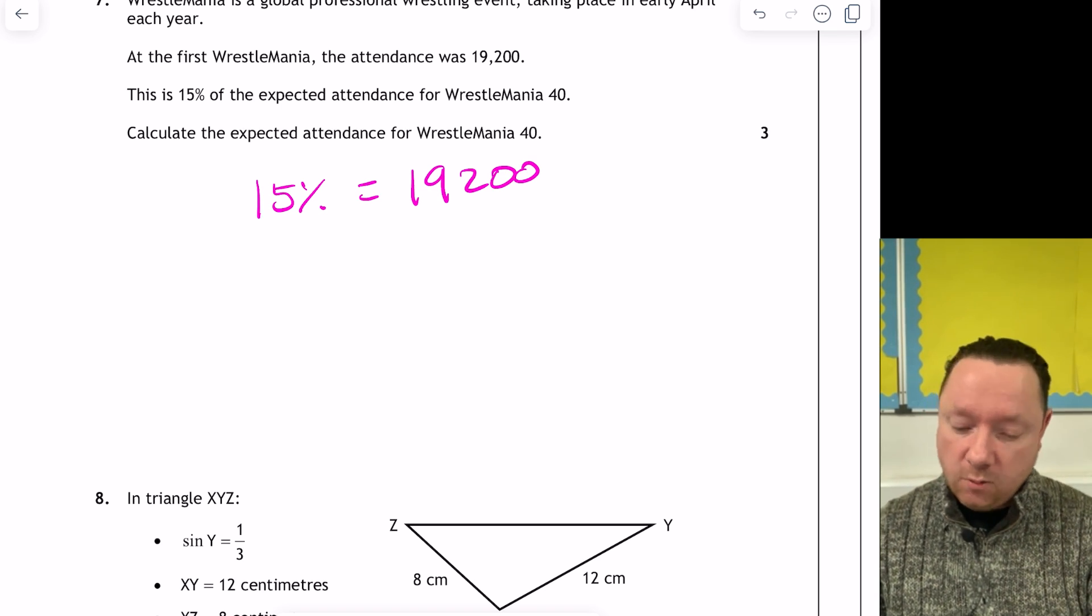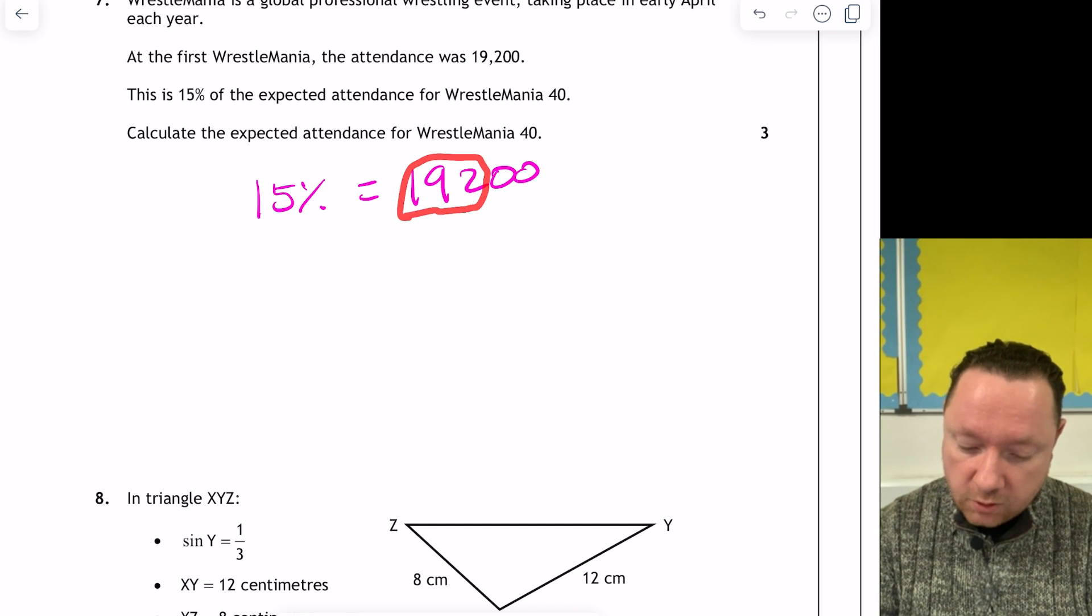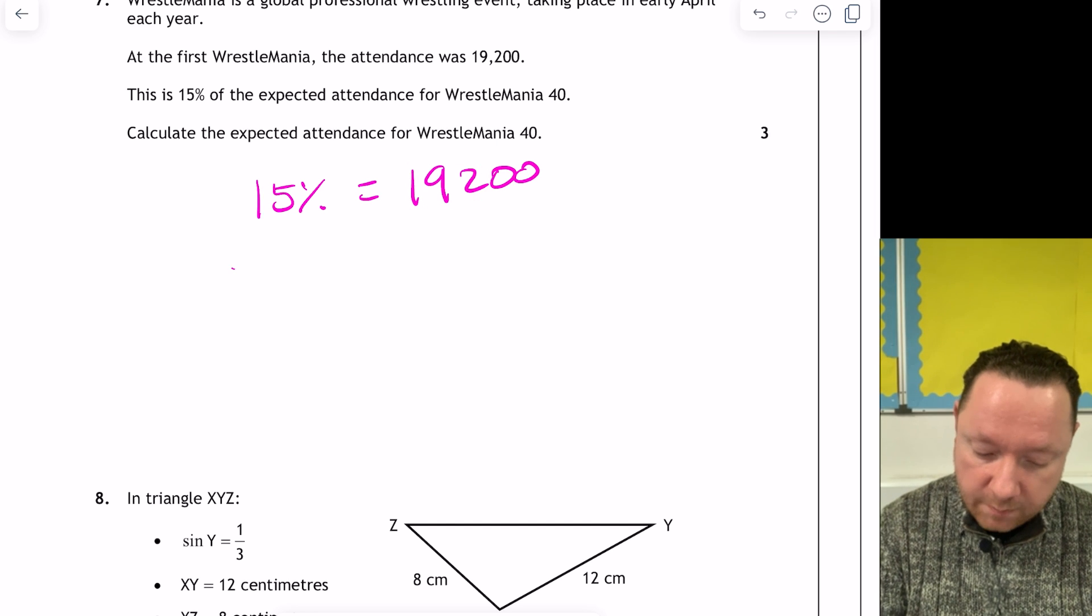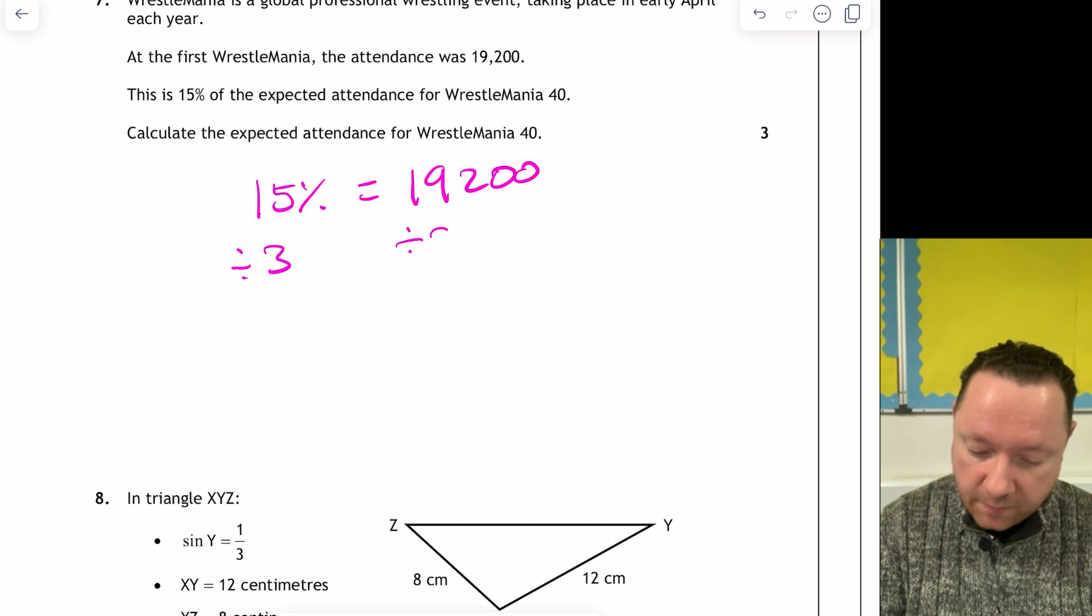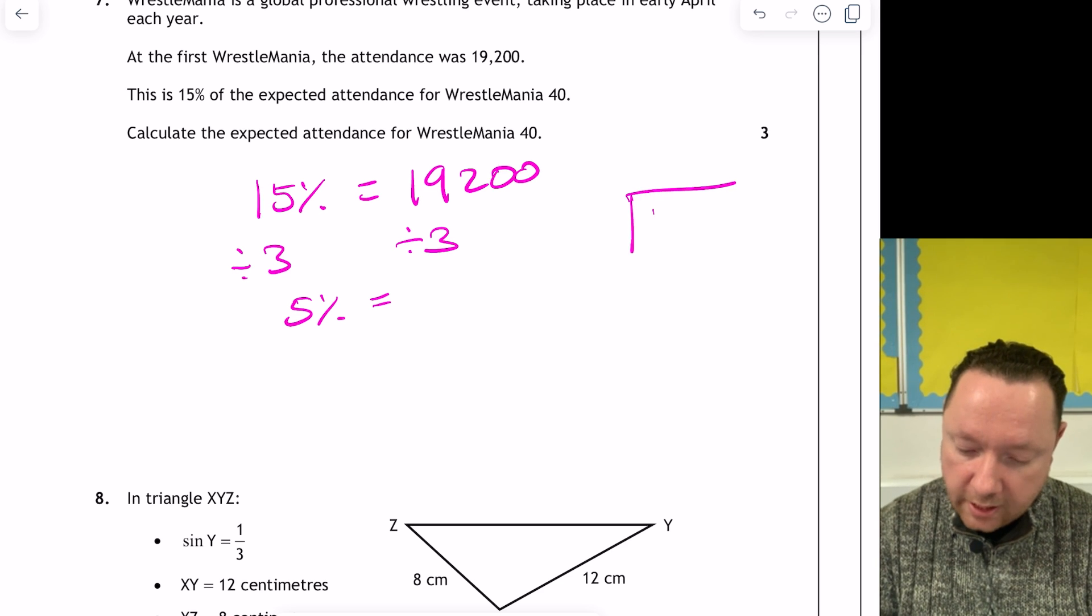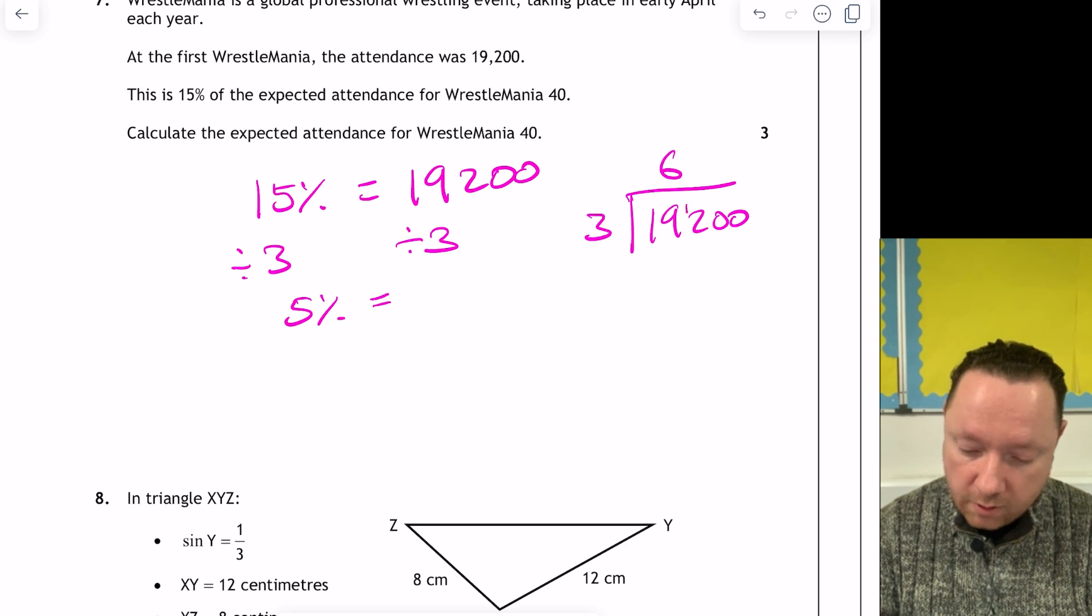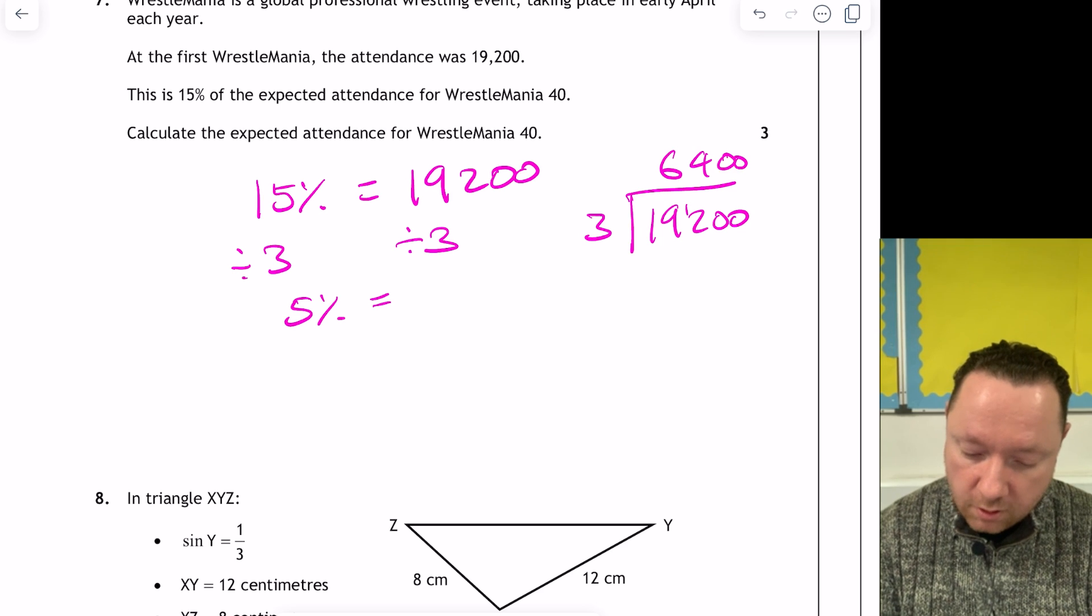If it was a calculator paper, I'd divide by 0.15, I'd be done. So dividing by 15 can be quite difficult. So instead, if you can think another number that goes into both of them, you can go down. So let's see if we can go down to 5%, because if we go to 5%, we can get up to 100% by times 20. So 3 goes into that. So I can divide by 3 on both sides. We could get 5% equals, 3 into 19,200 is 6,400.